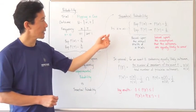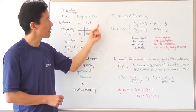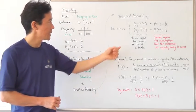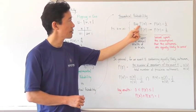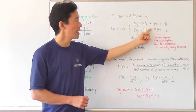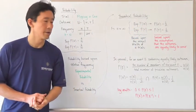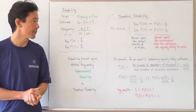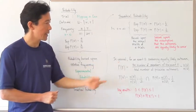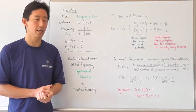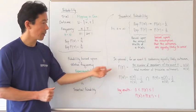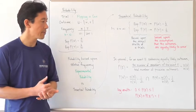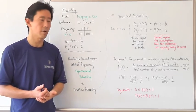For flipping a coin, as we flip the coin an infinite number of times, our experimental probabilities of getting heads and tails actually converge on the theoretical probability results of one half and one half. So in general, for an event E containing equally likely outcomes, the probability of E is going to be the number of members of event E divided by the total number of possible outcomes.